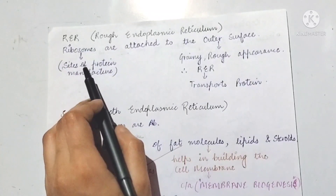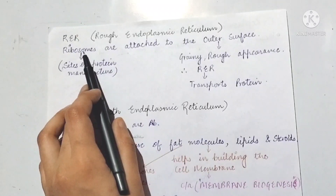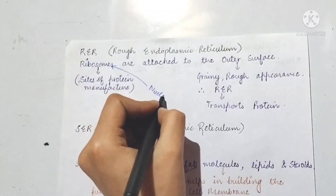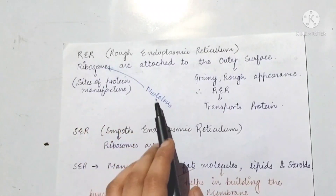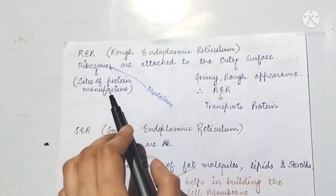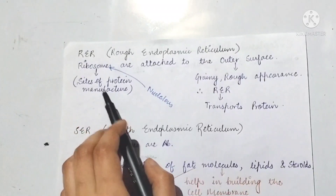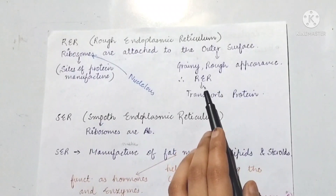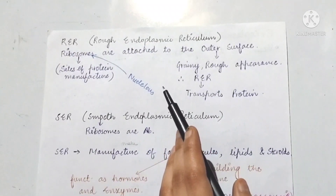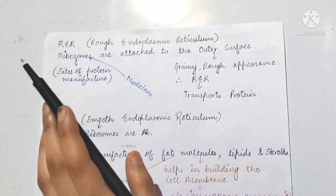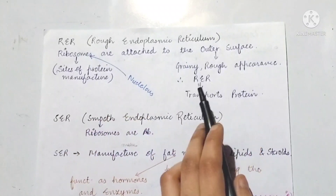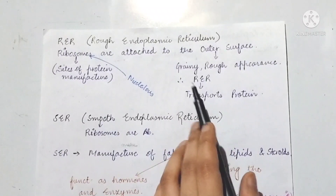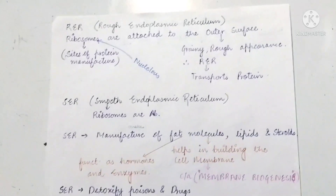Ribosomes are the site of protein manufacture. Ribosomes are made in the nucleolus, then attach to the outer surface of the endoplasmic reticulum, making it rough and grainy. The rough endoplasmic reticulum helps to transport proteins. Ribosomes synthesize proteins, and the rough endoplasmic reticulum transports those proteins.